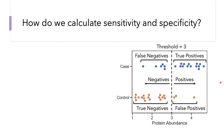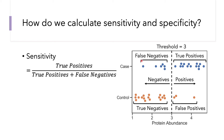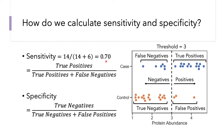Using these four types, we calculate sensitivity as the number of true positives divided by the total number of positives. Here that gives us 14 divided by 14 plus 6, yielding a sensitivity of 0.7. Specificity is the number of true negatives divided by the total number of negatives — 17 divided by 17 plus 3, or 0.85. The question then becomes: how do we choose a threshold? Here we chose an arbitrary one, but ROC curves help us choose one in a more principled way.